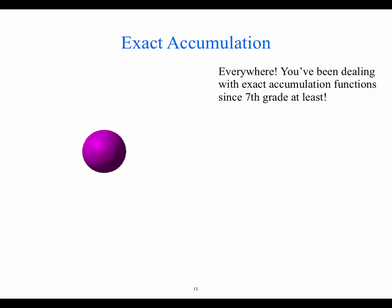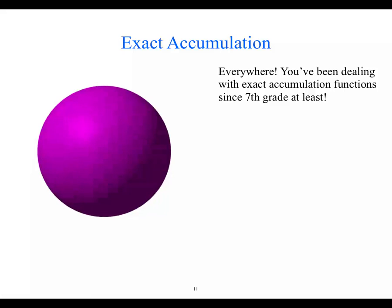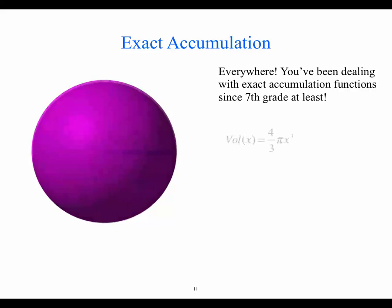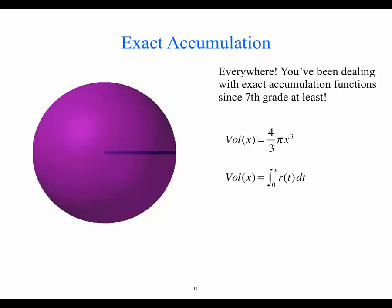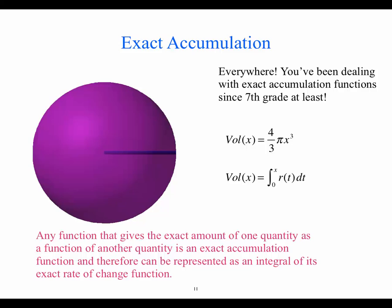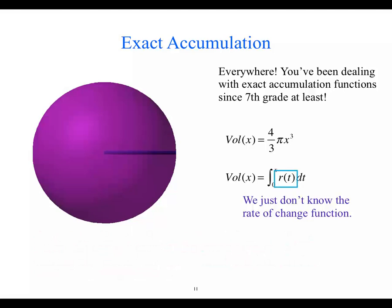Similarly, volume of a sphere can be thought of as an amount, and that amount can be thought of as having accumulated from zero — as an accumulation function. So any function that gives the exact amount of one quantity as a function of another is an exact accumulation function. Any amount function can be thought of as an accumulation function, and therefore it can be represented as an integral. We just don't know what the rate of change function is — that's what our journey is.